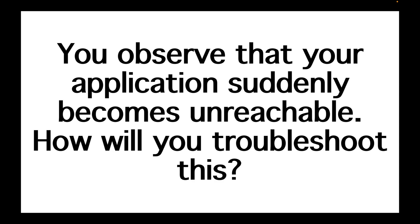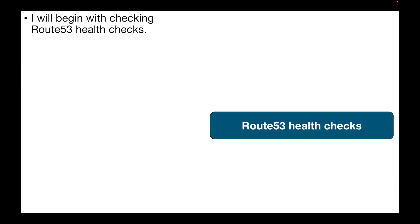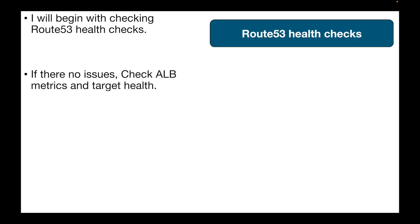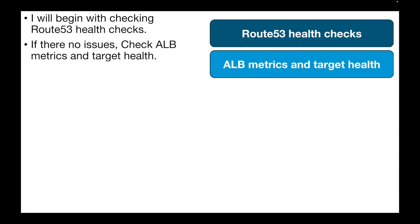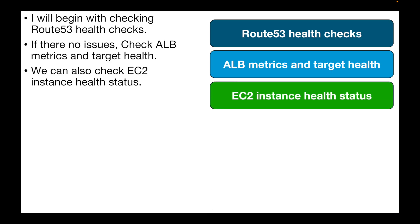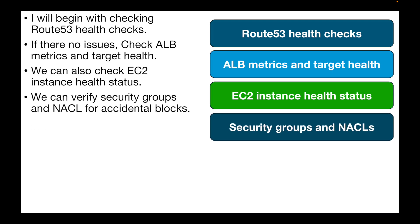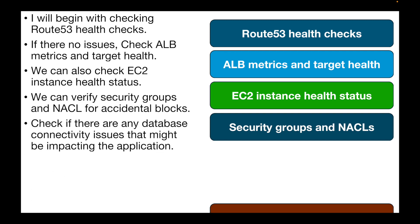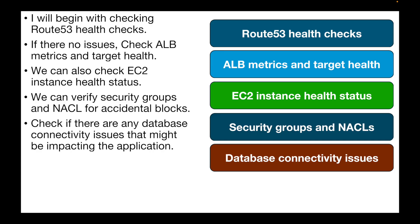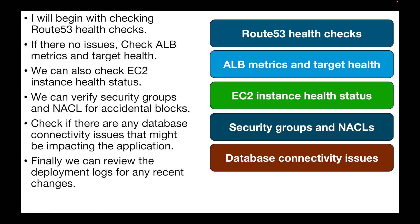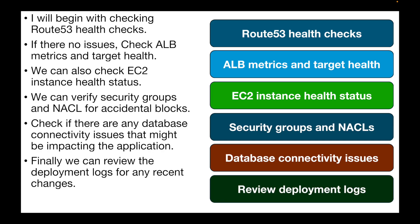The next question is: your application suddenly becomes unreachable. How will you troubleshoot this? Begin by checking Route 53 health checks, starting troubleshooting at the DNS level first. If no issues there, check load balancer metrics and target groups. Also check EC2 instance health status. Verify security groups and NACLs for any accidental blocks. Check for database connectivity issues that might be impacting your application. Finally, review deployment logs to see if any recent change occurred — if so, consider rolling back to the stable version.